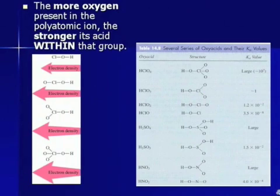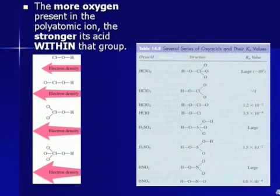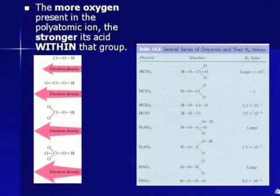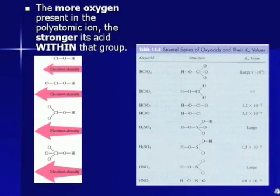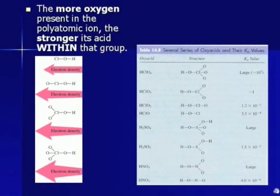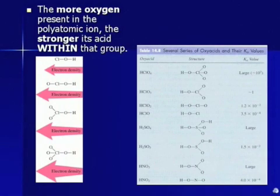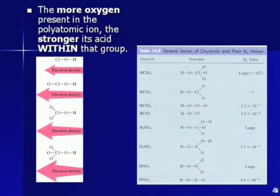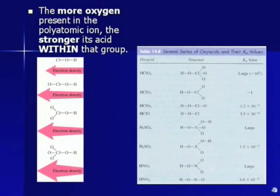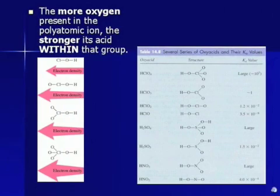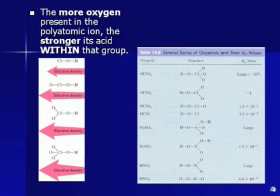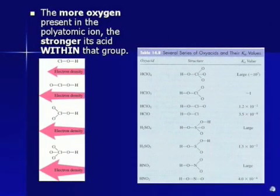This is kind of a side note: this isn't necessarily a strong acid, but the more oxygen is present in the polyatomic, the stronger the acid within that group. Notice the chart with four different types of Cl — one with one O, two O's, three O's, and four O's. The Ka will increase as you attach more O's onto that Cl, because you're increasing electron density, pulling electrons away from the hydrogen, making it easier to lose that hydrogen.